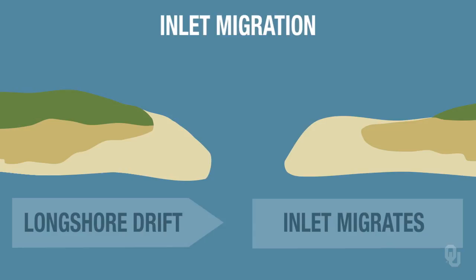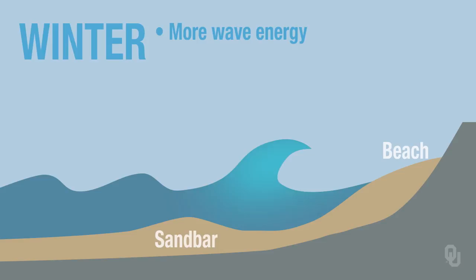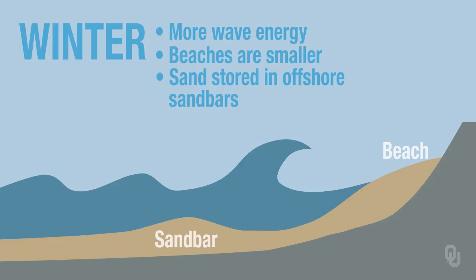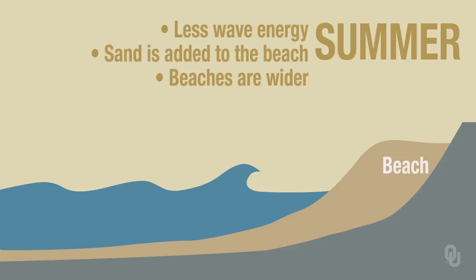A third process that operates on barrier islands is the summer-winter change that occurs on the beach. During the winter, there's more wave energy, the beaches are smaller, and the sand is stored offshore in sandbars. But during the summer, there's less wave energy and more regular wave energy, sand is added to the beaches, and the beaches are wider. What happens is that sandbars migrate onto the beach and make the beach wider.